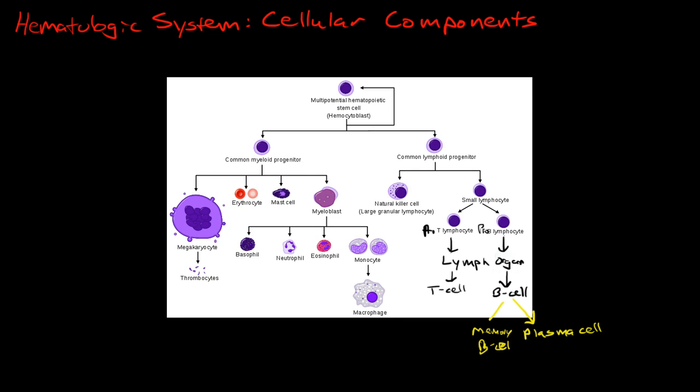Here we have in front of us a table that shows the progeny of the multipotent hematopoietic stem cell. Now, this stem cell lives in our bone marrow,